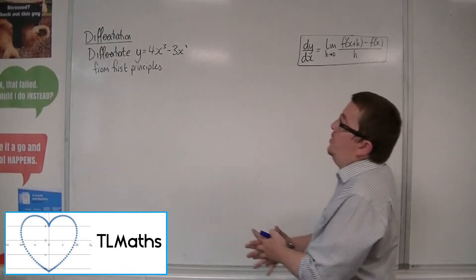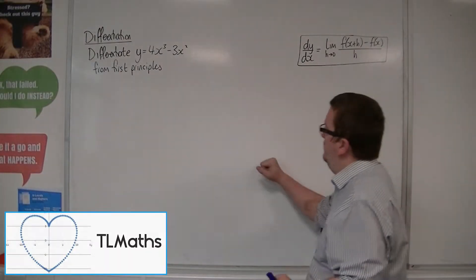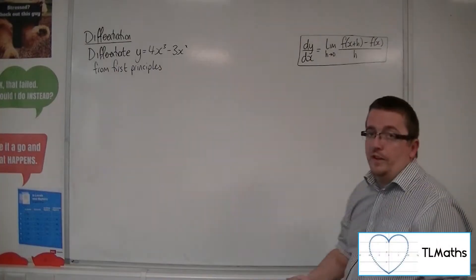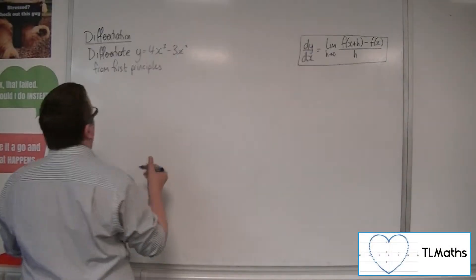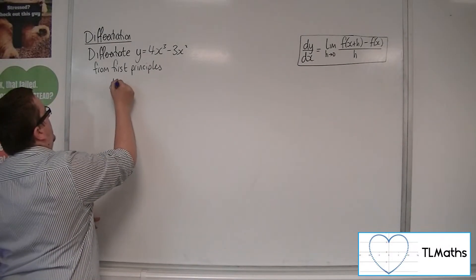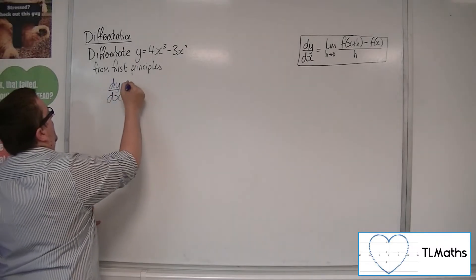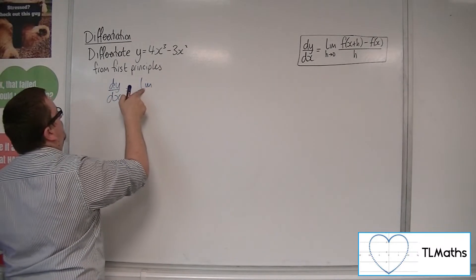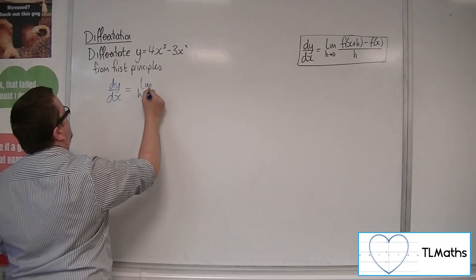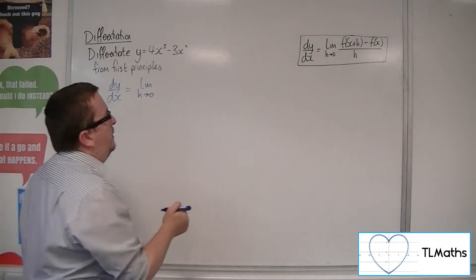So let's say I want to differentiate y equals 4x cubed minus 3x squared from first principles. So dy by dx is equal to the limit as h tends to 0 of f of x plus h, take away f of x.